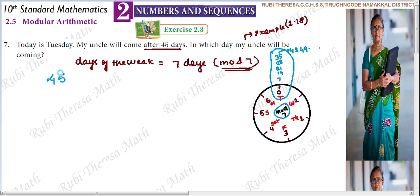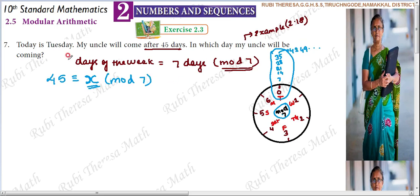The number is 45. So 45 is congruent to some remainder mod 7. Using the formula a is congruent to b mod n, x is the remainder. The largest multiple of 7 less than 45 is 42.